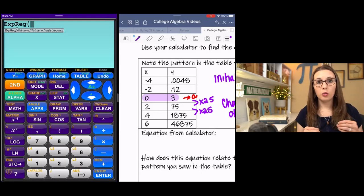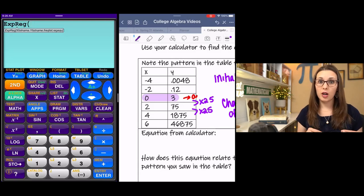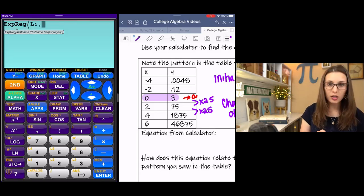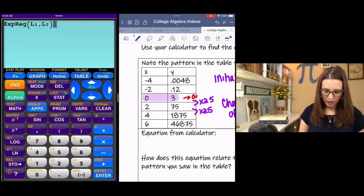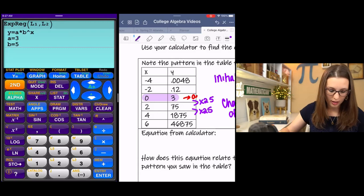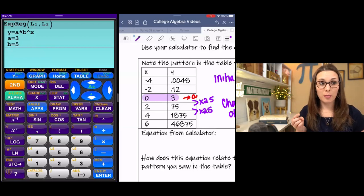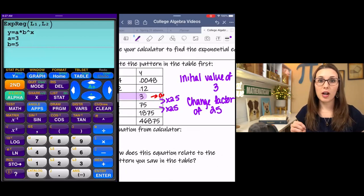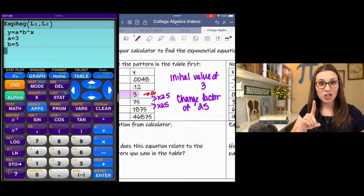And then I need to tell my calculator what I'm using for x and what I'm using for y. I put x in L1. So I'm going to go Second, 1, comma. And then I put y in L2. Enter. And let's see. Okay, this is really cool. So I had an equation in my mind that I thought it would be, if you'll notice in the top, I have a change factor of 25. But the issue is, this is kind of a troubleshooting thing.